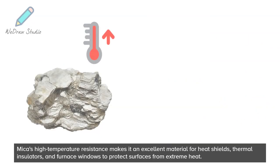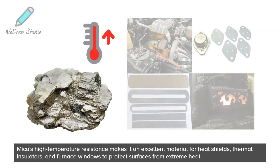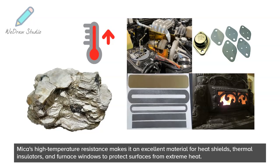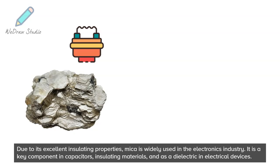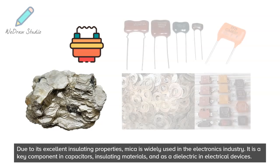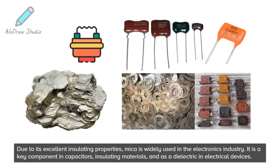Mica's high temperature resistance makes it an excellent material for heat shields, thermal insulators, and furnace windows to protect surfaces from extreme heat. Due to its excellent insulating properties, mica is widely used in the electronics industry. It is a key component in capacitors, insulating materials, and as a dielectric in electrical devices.